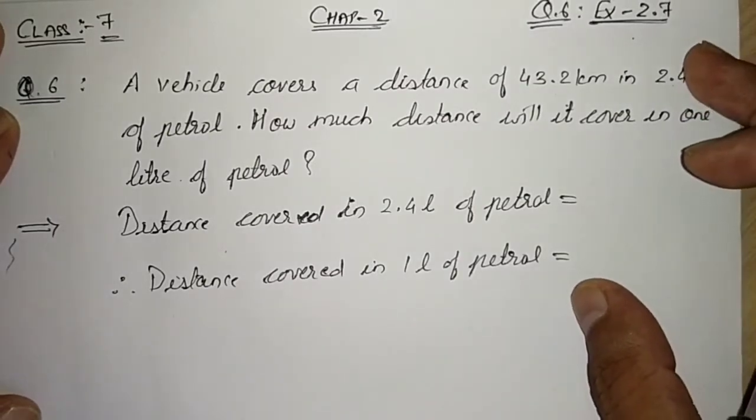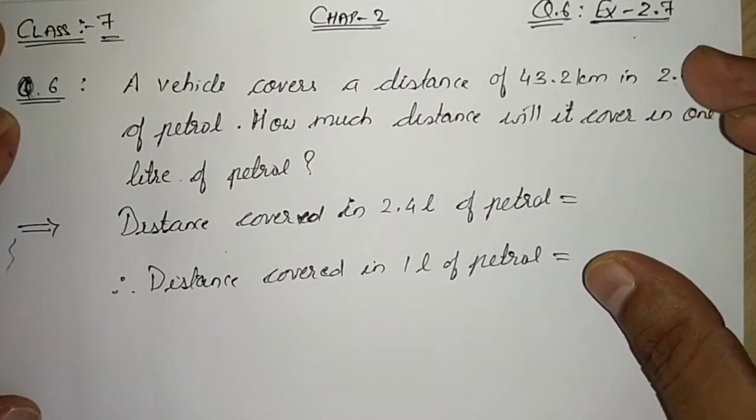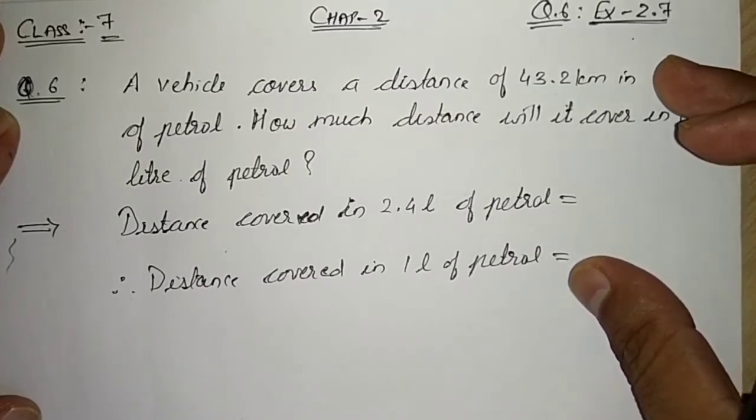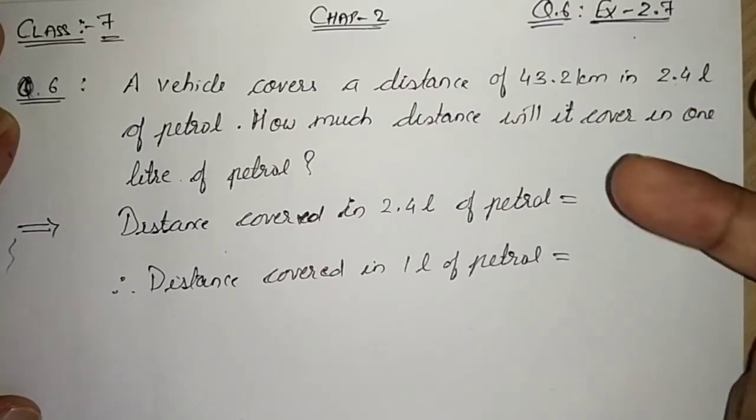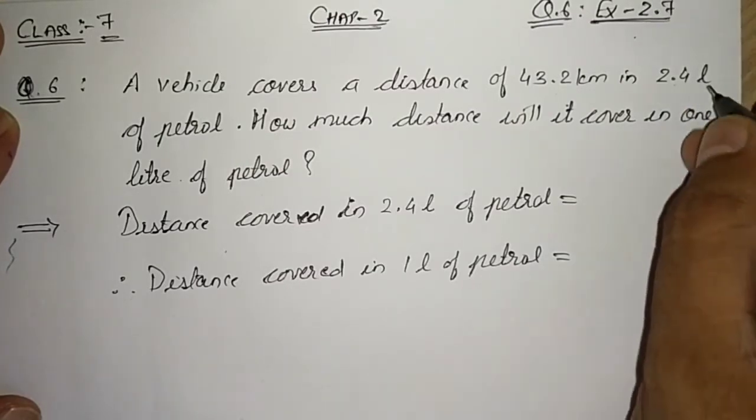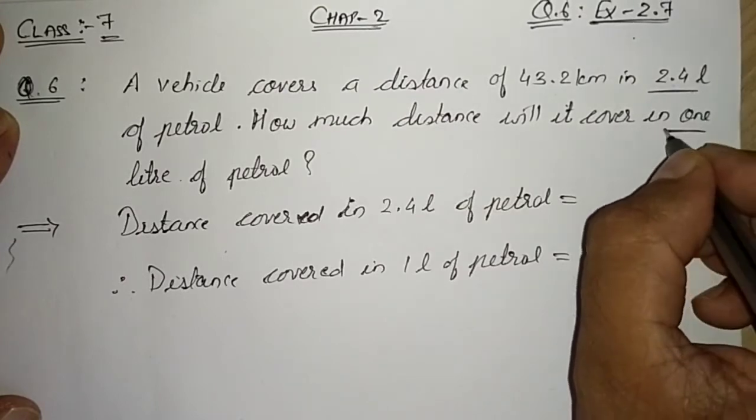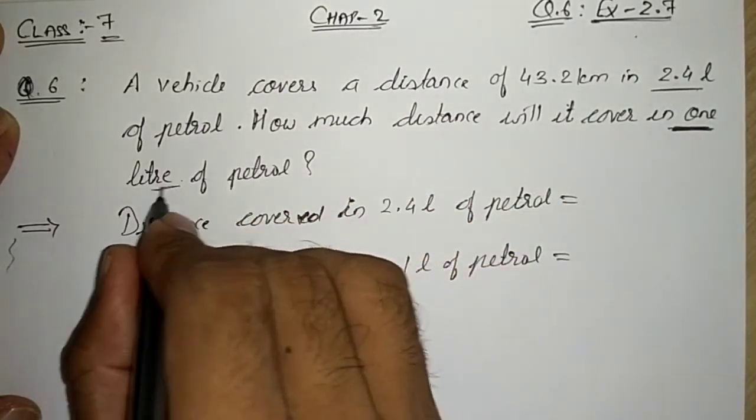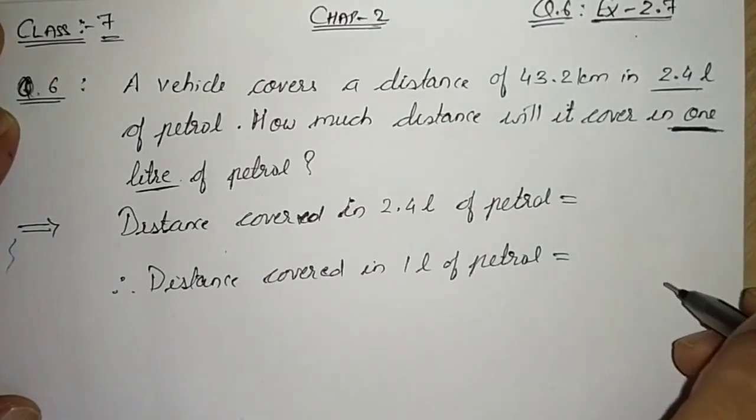When this type of question arrives, please keep in your mind: if we have to find maximum value, we always multiply. And if we have to find minimum value—you can see 2.4 liters and here we have to find one liter of petrol—so if we have to find minimum value, we always divide.